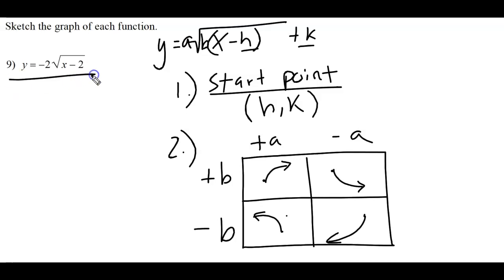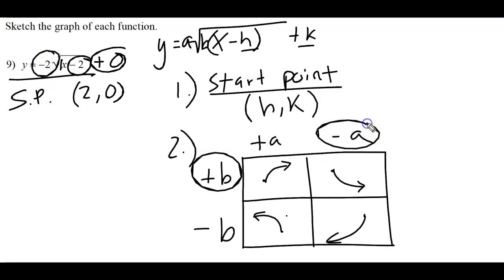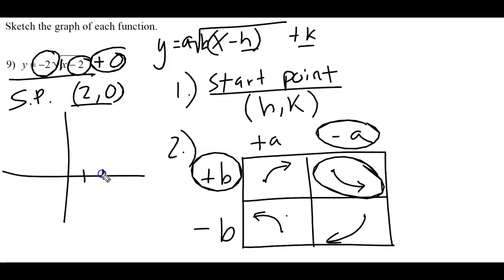For number 9, there's no K, so I add zero. My starting point is (2, 0) — that's H with its sign changed, and K is zero. There's no B shown, so B is positive 1. The A value is negative. With positive B and negative A, the graph goes down and to the right from the starting point at (2, 0).